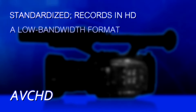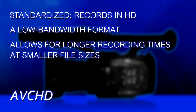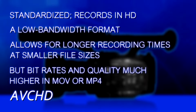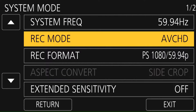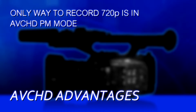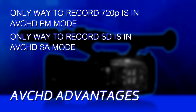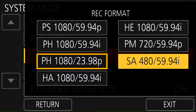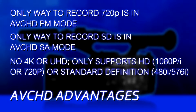The third choice is AVCHD. AVCHD is a standardized file format that does record high def footage, but it's a very low bandwidth recording format. So if you need extremely long record times, AVCHD really has something to offer, but if you're looking for quality, the bit rates are much higher in MOV and MP4. I wouldn't look at AVCHD unless a client has specifically asked for it, or you need one of its unique features: the only way to record 720p on this camera is using AVCHD in PM mode, and the only way to record standard definition NTSC or PAL video is using the SA recording mode in AVCHD.